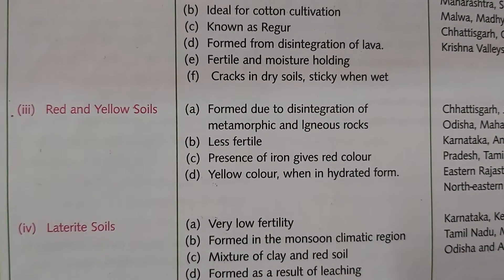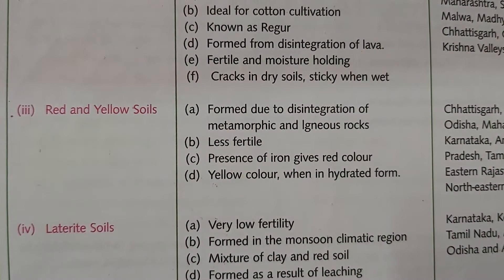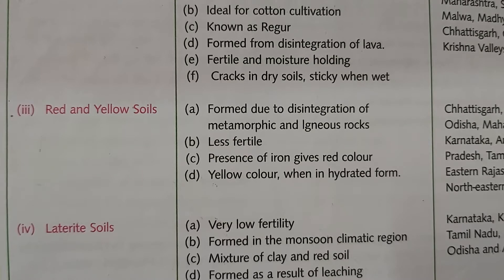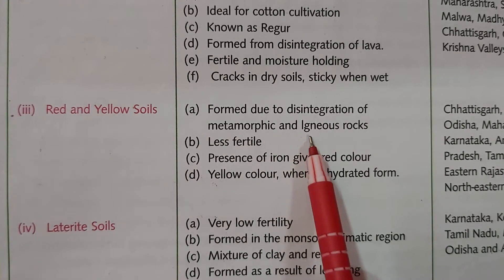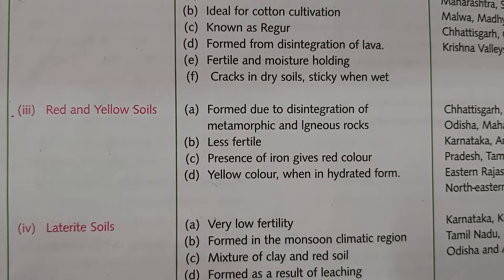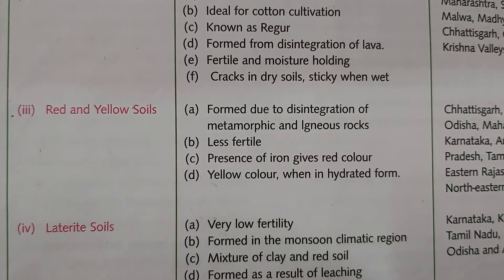Red and yellow soil is formed due to the disintegration of metamorphic and igneous rocks. The word 'igneous' comes from a root meaning fire. The oozing out of lava leads to the formation of two types of igneous rocks.